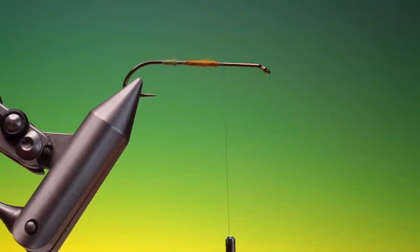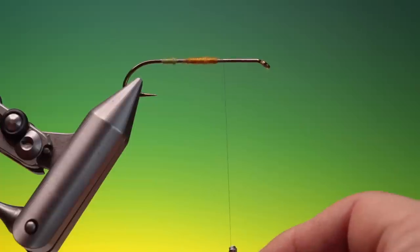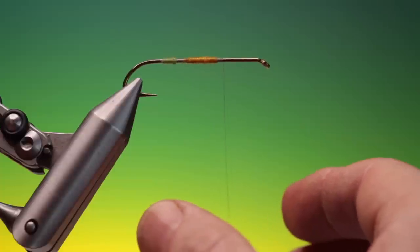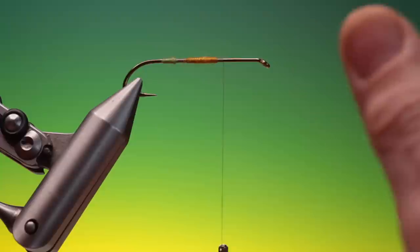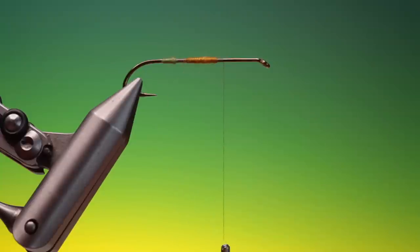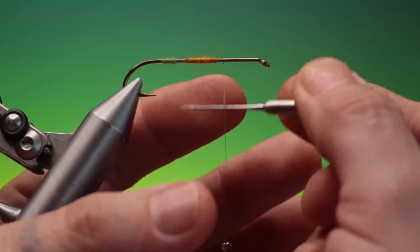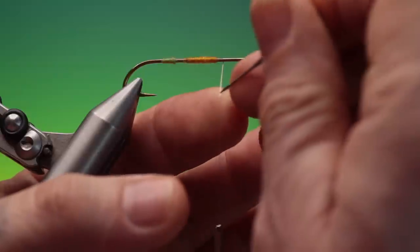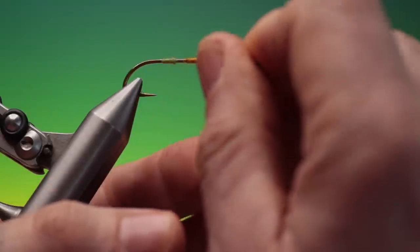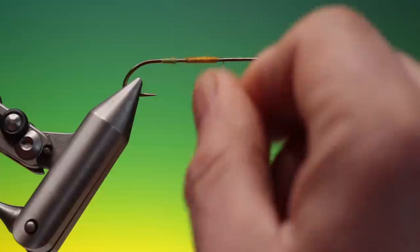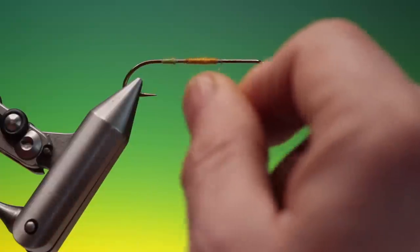And then the third technique. What we need to do is we need to spin our tying thread anti-clockwise. So we get a flat profile. And I can split the thread for a dubbing loop. So I'll just flatten that out. And then I can split it like that.